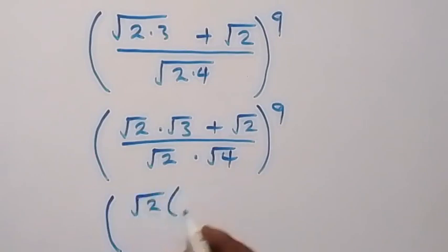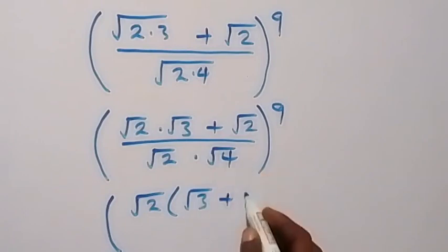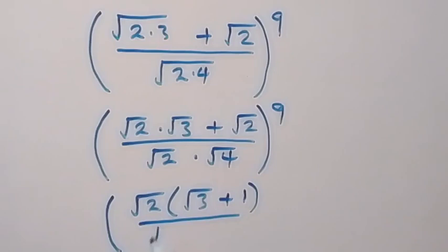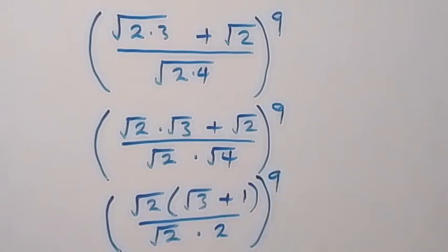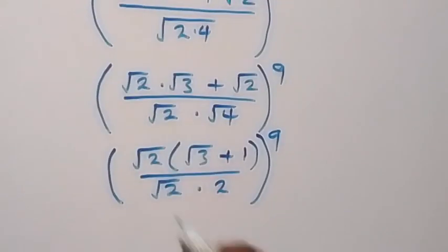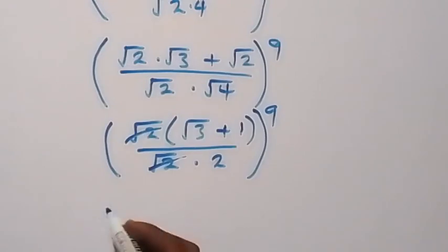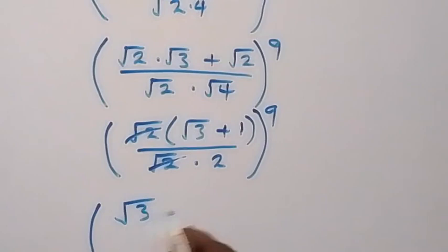All raised to power 9. Since root 2 is common here, this becomes — take root 2 out of the bracket — we have root 3 left, then plus 1 left, then over root 2 times root 4, which is 2. Everything is raised to power 9, and the root 2 can cancel root 2.